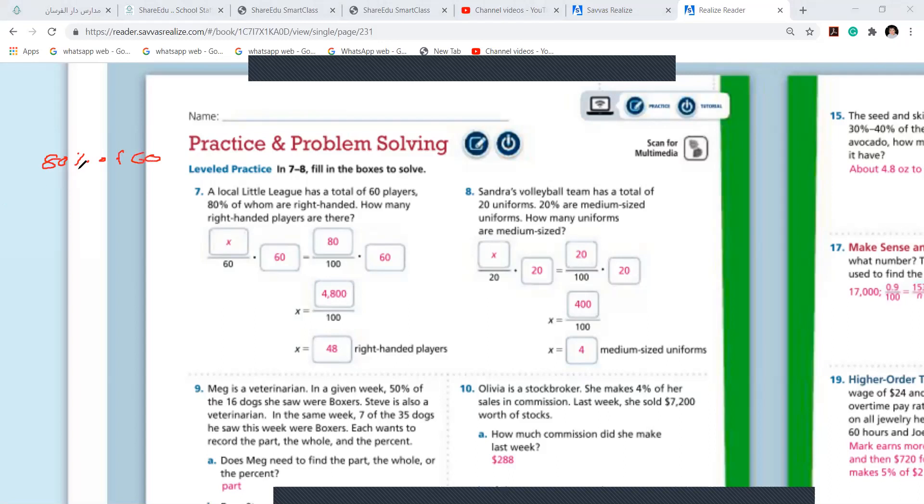What does that mean? Yesterday I taught you: just write 80, this percent is nothing but 100, of is nothing but times, and 60. So 80 over 100 times 60. 80 times 60 is 4,800 over 100. When you cancel them, you get 48.